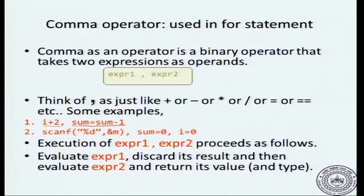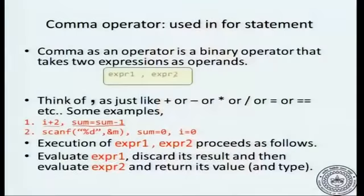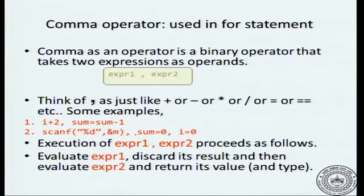The comma operation is involved in an expression called the comma expression. Every expression has a value, and the value of the comma expression is expression 2. If you have multiple expressions, you figure out the associativity of the comma expression — and the comma expression associates left to right.